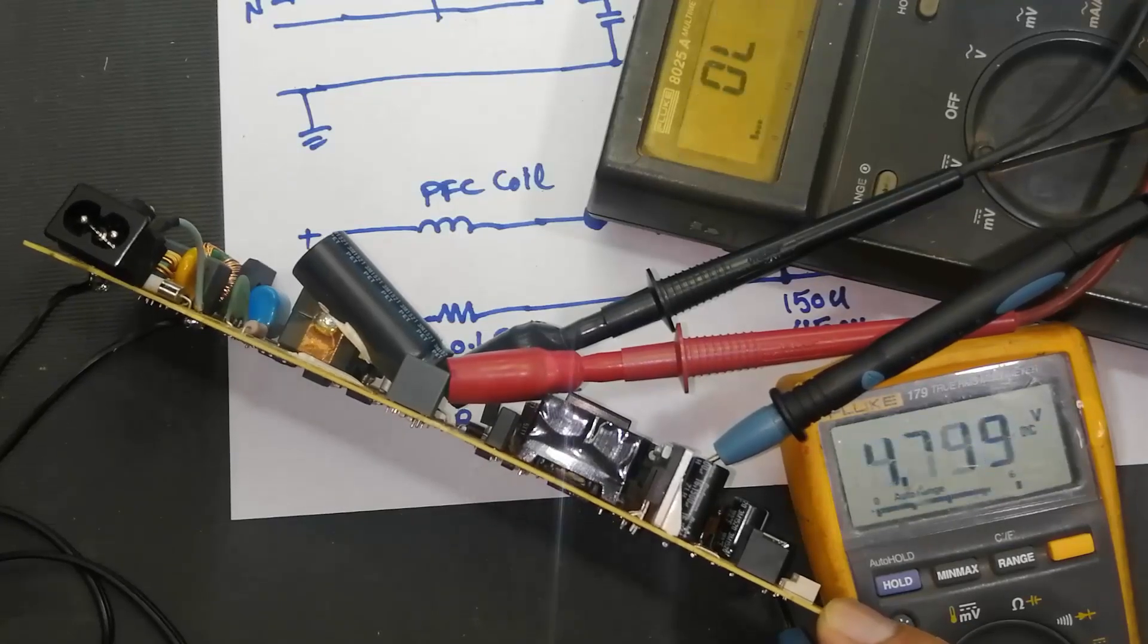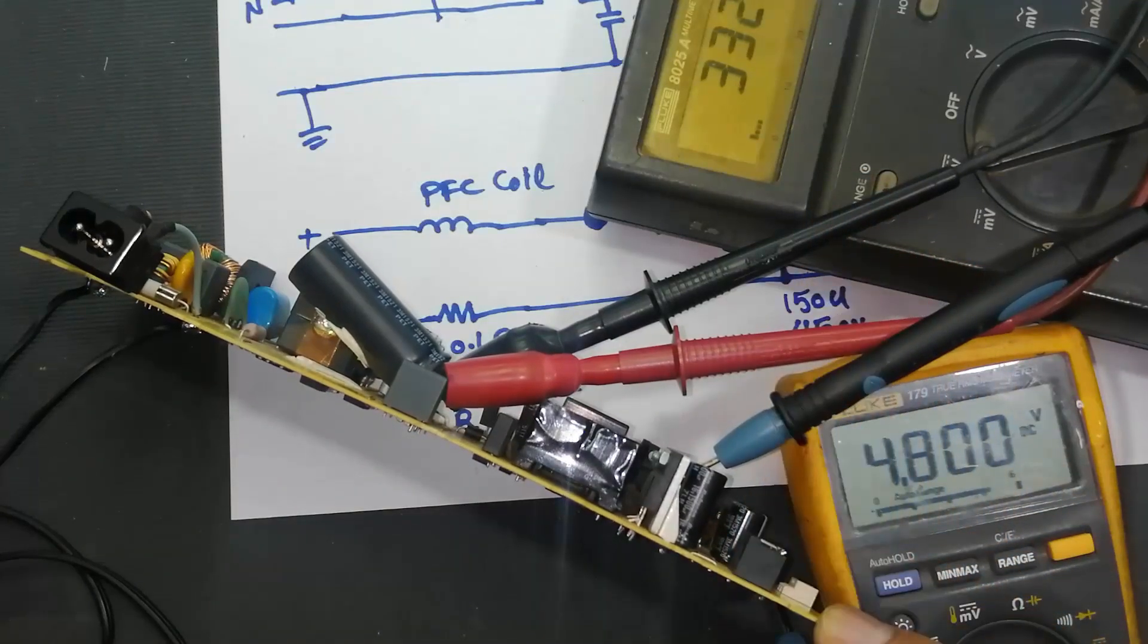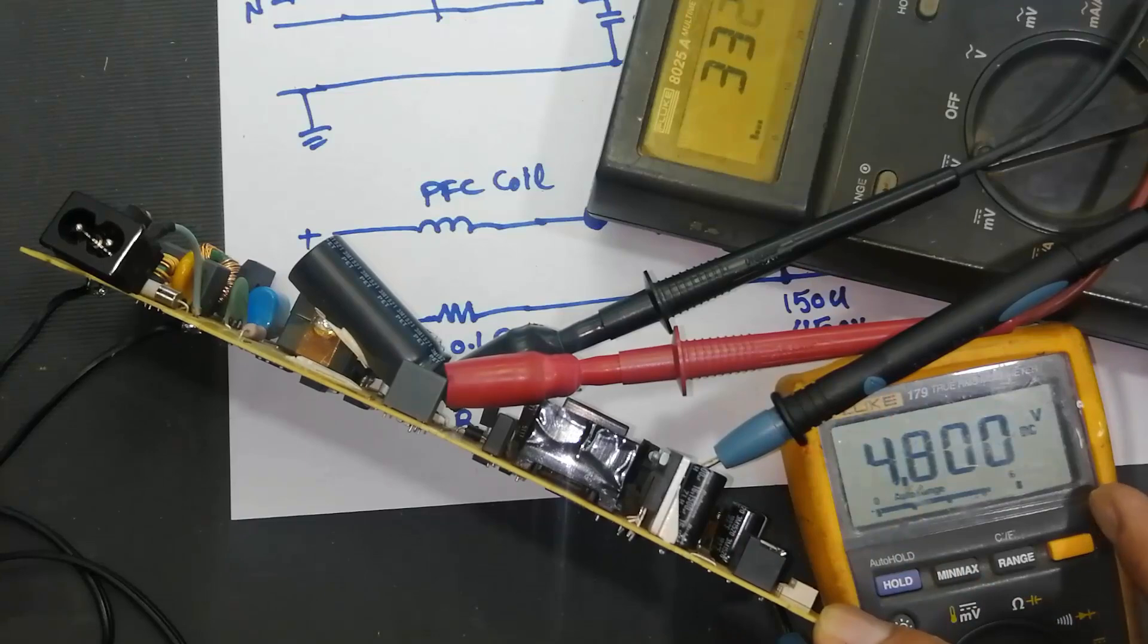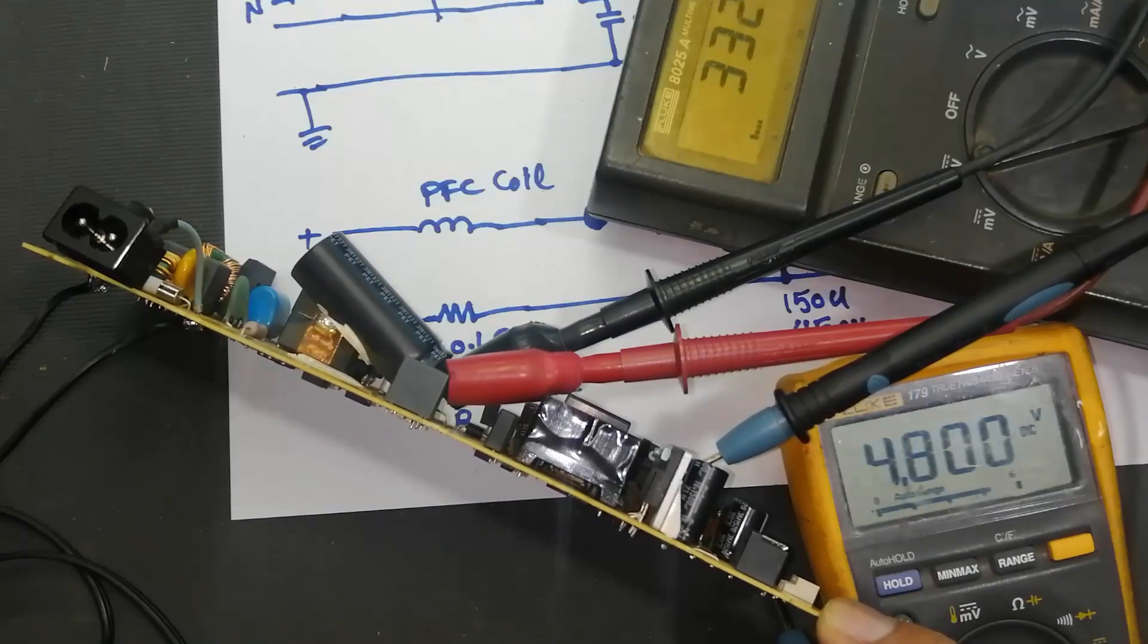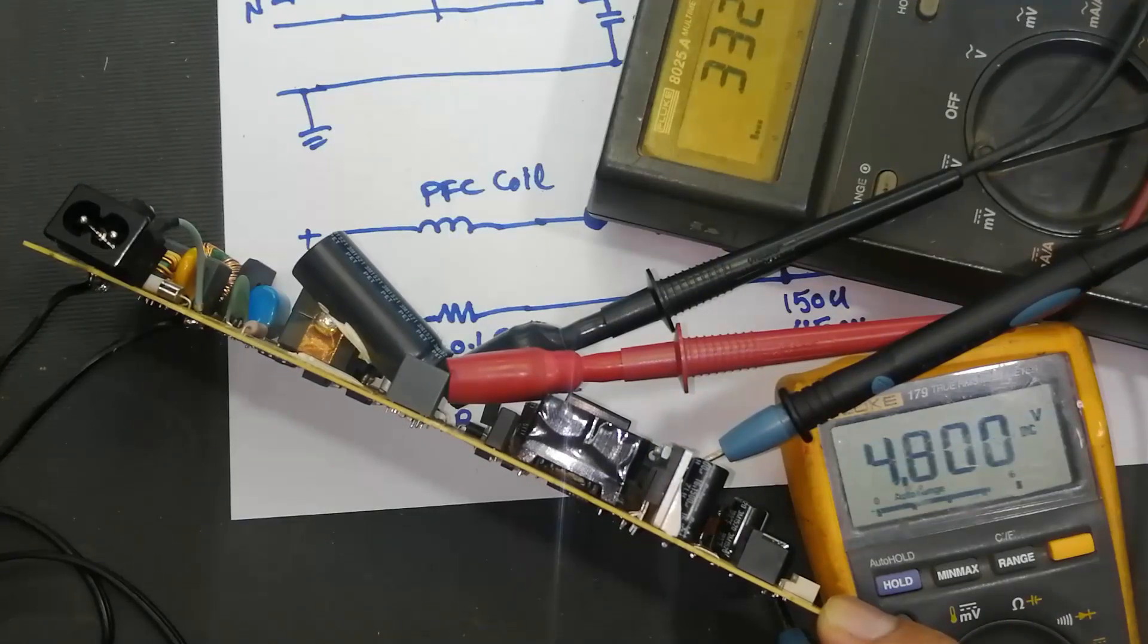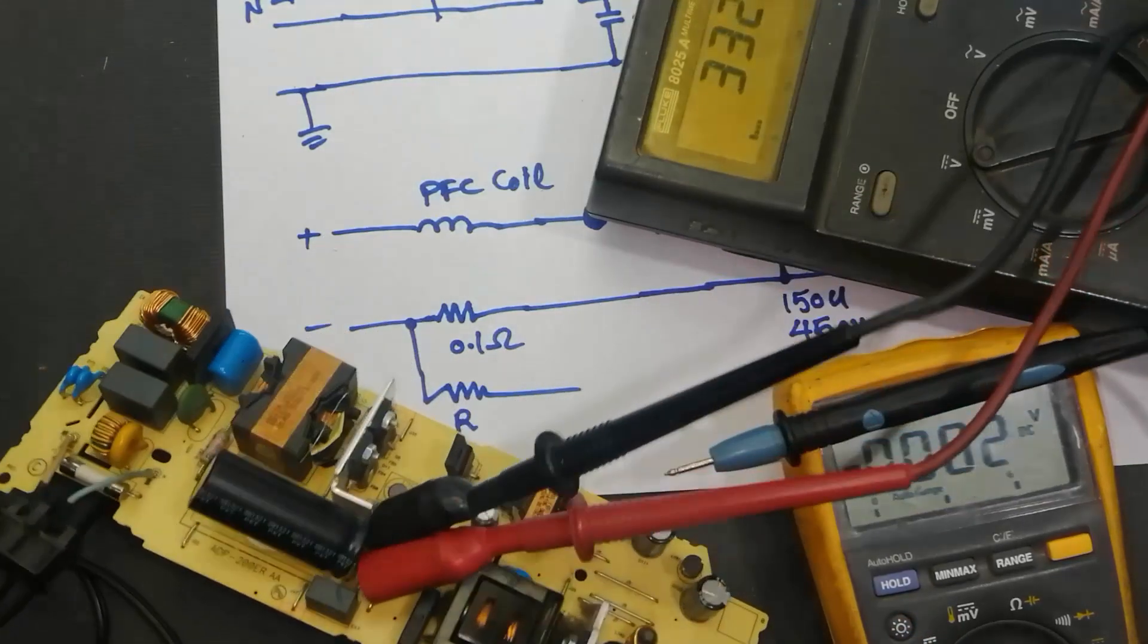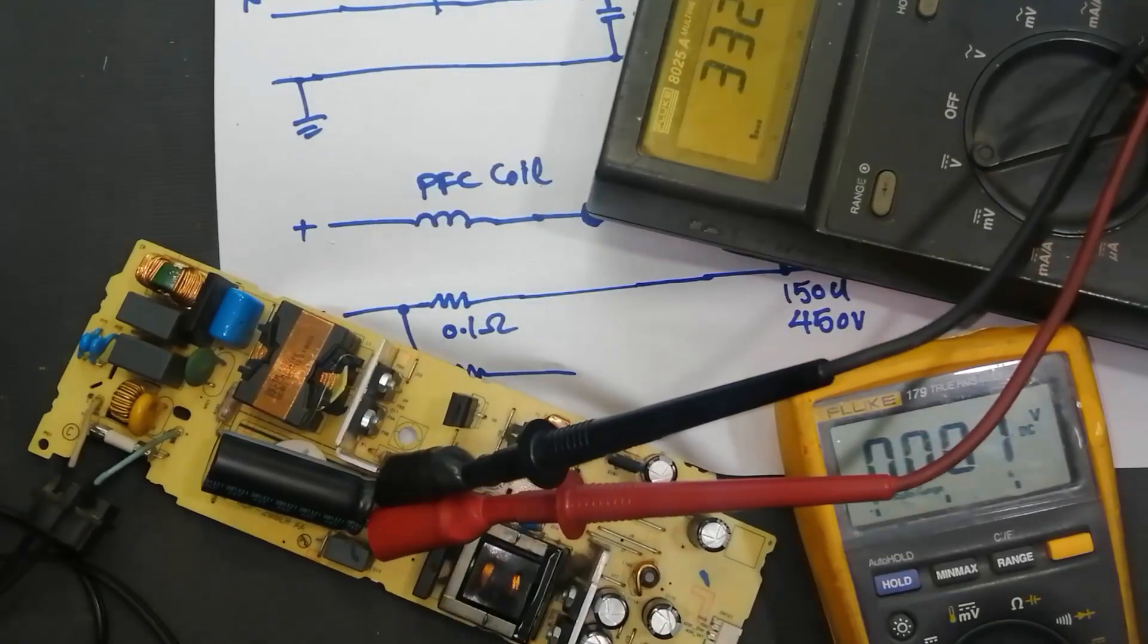Now I will switch this voltage supply to 220V. We can see the DC level is now 332V, but these voltage are stable. The standby section is giving 5V, 4.8V stable. Even the input voltage is increasing or decreasing, but we are taking the regulated output 4.8V. So standby section will provide a regulated 5V regardless of what is the input voltage.